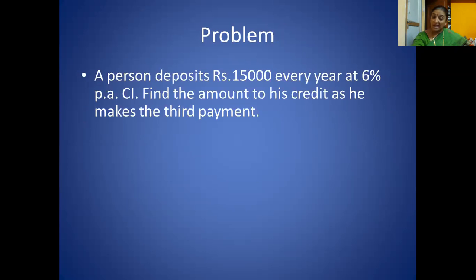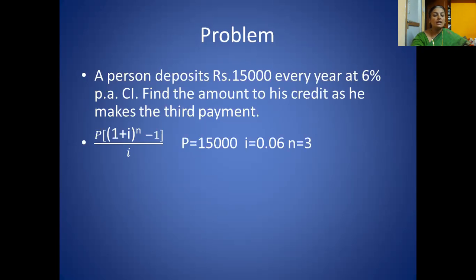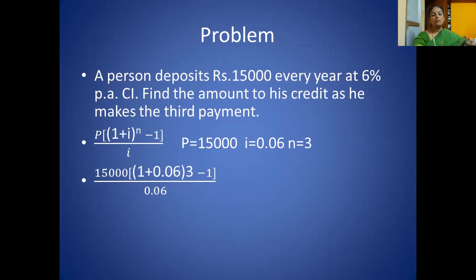Problem 4: A person deposits rupees 15,000 every year at 6% per annum compound interest. Find the amount to his credit as he makes the 3rd payment. Given: P = 15,000, i = 6% = 0.06, n = 3. Formula: P × [(1 + i)^n − 1] ÷ i, so 15,000 × [(1 + 0.06)^3 − 1] ÷ 0.06.